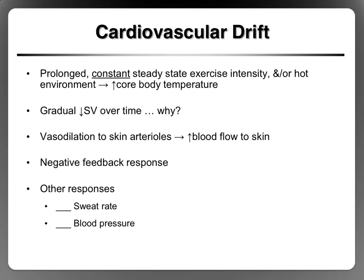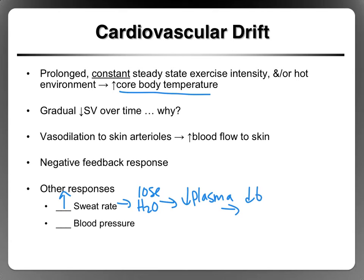Other things occurring during cardiovascular drift: remember, the body is heating up. When the body heats up, you sweat, and when you sweat, you lose water. Some of that water is going to come from the plasma, so we're going to get a reduction in blood volume. A reduction in blood volume also contributes to a reduction in stroke volume. So the longer you go and the more you sweat, the more stroke volume is going to decrease, and the more heart rate is going to have to increase to compensate and maintain cardiac output.